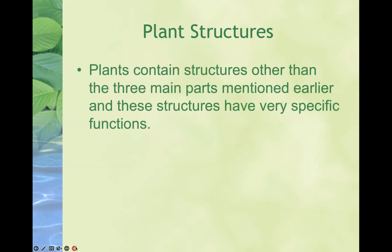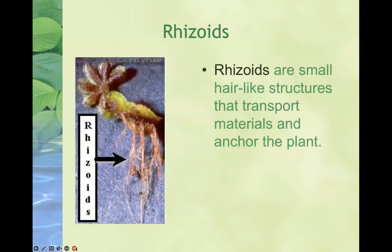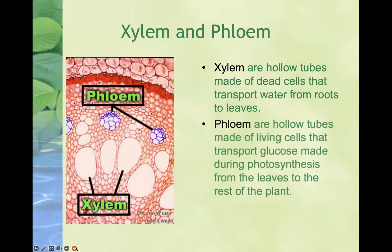The three main parts of the plant are the roots, stem, and leaves, but there are additional structures to be familiar with: rhizoids, xylem, phloem, the cuticle, and the stomata. Rhizoids are small, hair-like structures that help transport materials and anchor the plant, similar to the roots. Xylem are hollow tubes made of dead cells that transport water from the roots of the plant out to the leaves. Phloem are hollow tubes made of cells that transport glucose made during photosynthesis from the leaves to the rest of the plant.